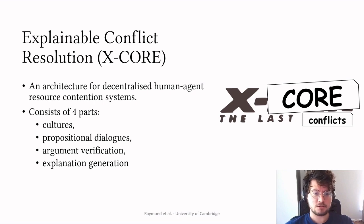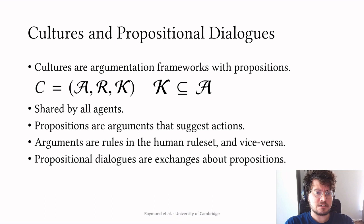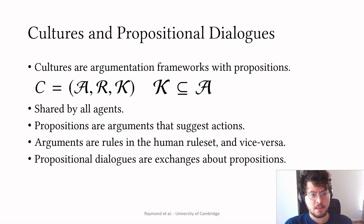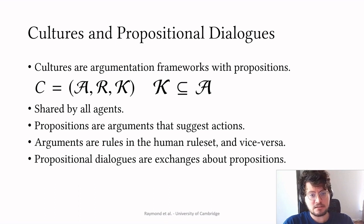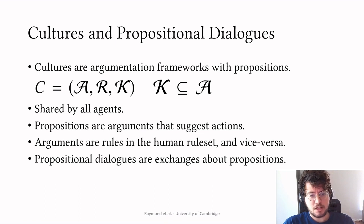Let's look at cultures and propositional dialogues. We say a culture C is composed by a set of arguments A, the set of attack relationships R, and a new set called propositions or K. K is a subset of the set of arguments A — these are actions that should be taken to resolve a contested resource. If an agent says "you should give this item to me" or "you should let me pass," these are propositions. A dialogue then happens with arguments that support or challenge this proposition. It's important to mention that this culture is shared by all agents. In X-Core, each argument represents a rule in the human rule set and vice versa.